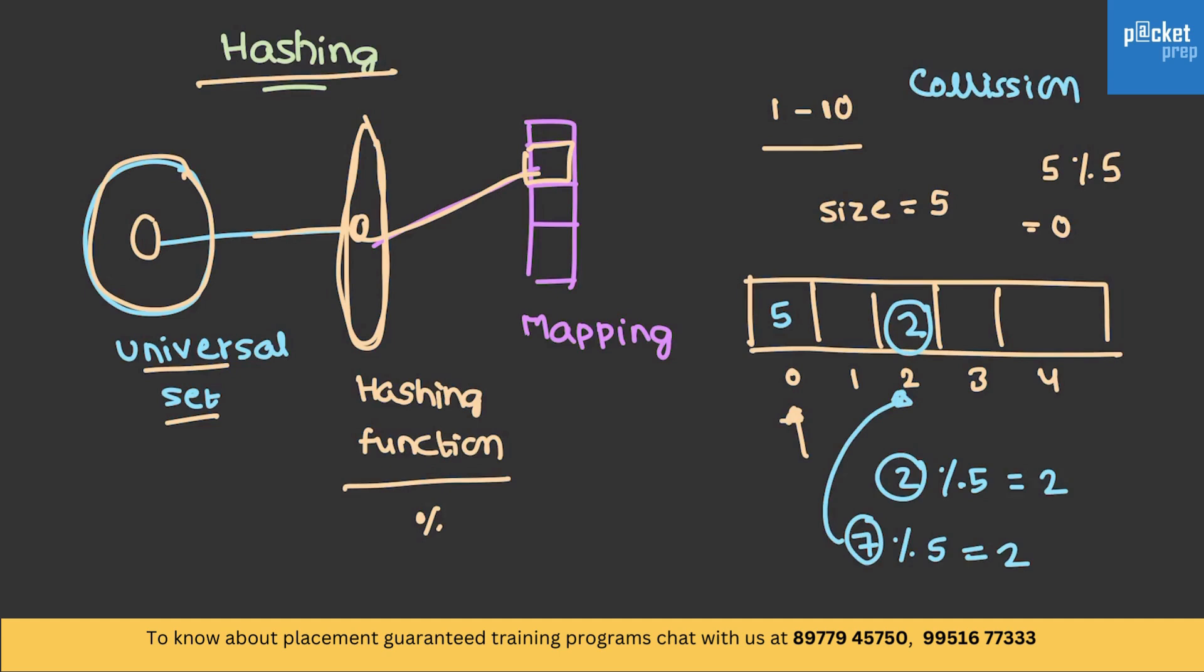We have defined hashing or hash function so that we will be able to search, delete, insert an element in order of 1 time. But, because of the collisions, we are making it more worse. So, to avoid collision, we will try to follow some of the steps.